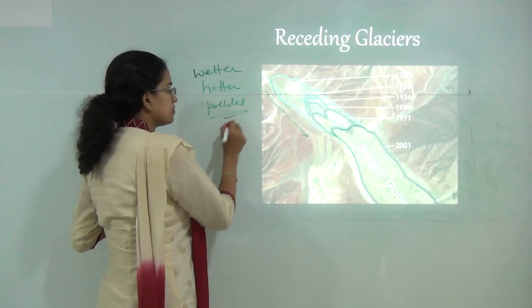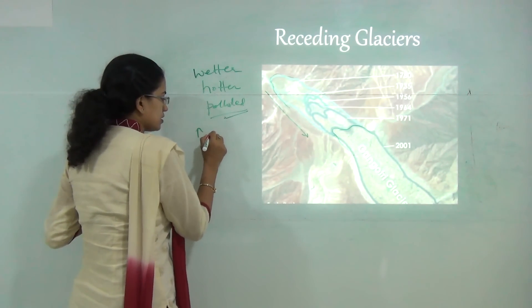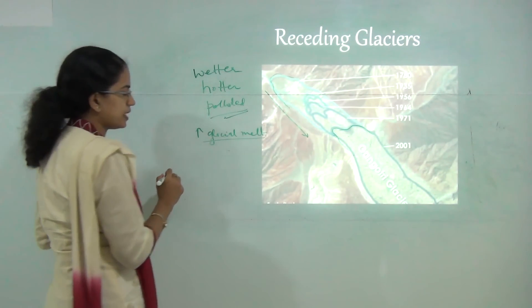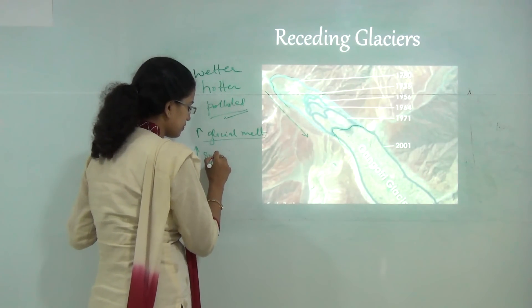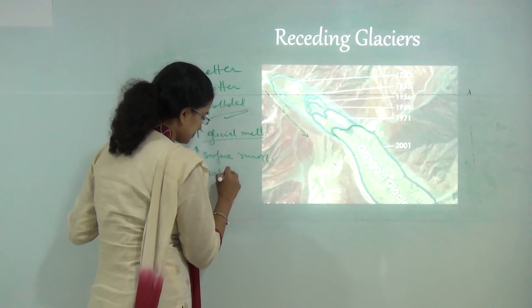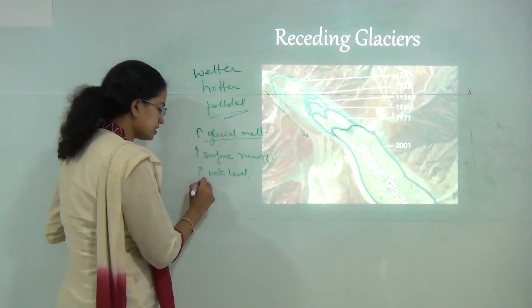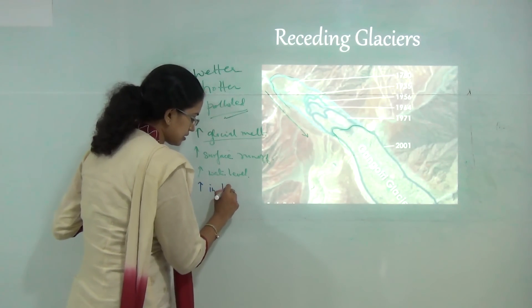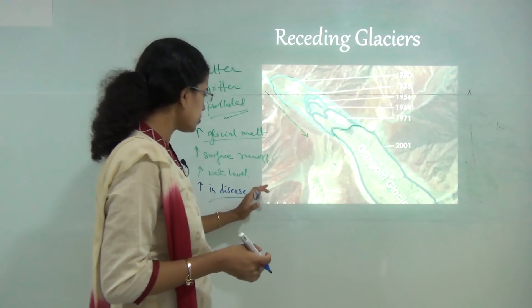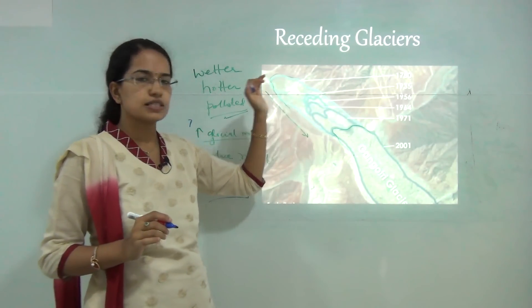Because the weather is becoming much hotter, there is an increase in glacial melt. This increase in glacial melt leads to more surface runoff and a rise in water levels. Once there is a rise in water levels, it creates problems for safe drinking water and increases diseases caused by unsafe drinking water, like cholera and typhoid. All these are ultimately a result of the climate change phenomena taking place in the Tibetan region.